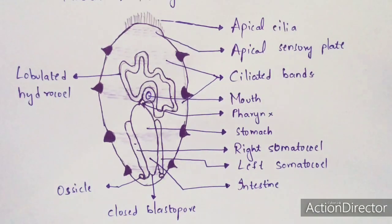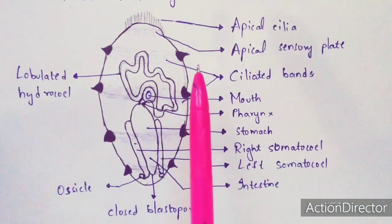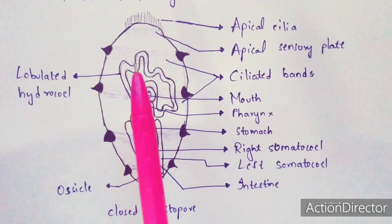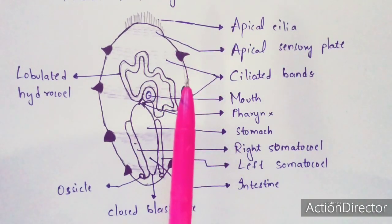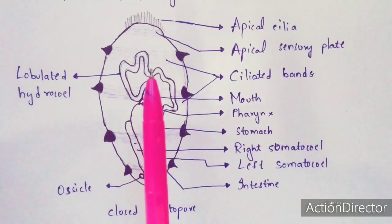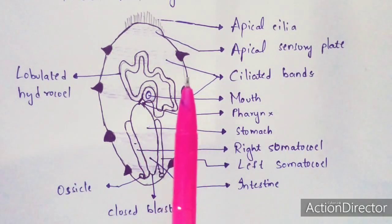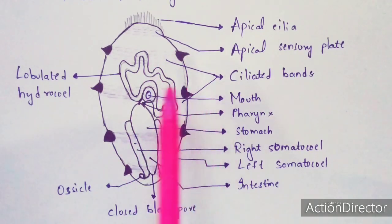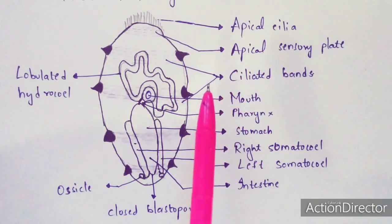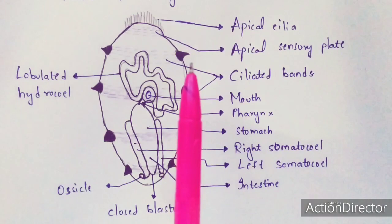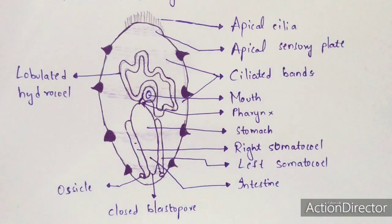After completion of the doliolaria larva stage, it swims and then attaches to a rock in the sea. A stalk develops on its body. The doliolaria larva then becomes the pentacrinoid larva, because the stalk develops when it attaches to a rock. The internal organs — mouth, pharynx, stomach, intestine — rotate through an angle of 90 degrees, and then it becomes adult. In this way it undergoes metamorphosis and becomes adult.